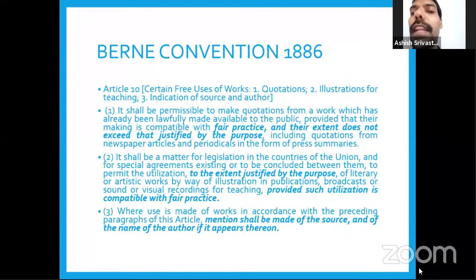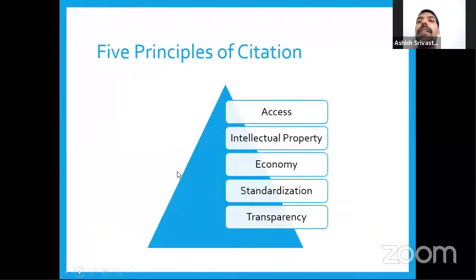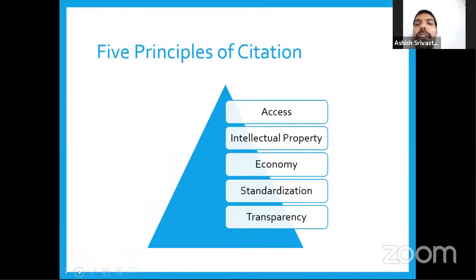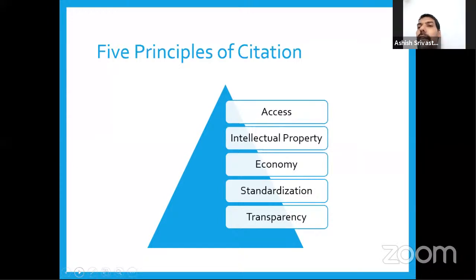The economic aspects of citation are important — if you cite according to Bluebook, Bluebook earns money; if you don't cite, they can litigate you for copyright infringement. There are five pillar principles of citation: access, intellectual property, economy, standardization, and transparency. Access is important — a clear citation like 'AIR 1978 Supreme Court 578' allows you to find the case easily. IP has made a sea change especially after 2010. Bluebook, published since 1921, claims gold standards and recently published its 21st edition.